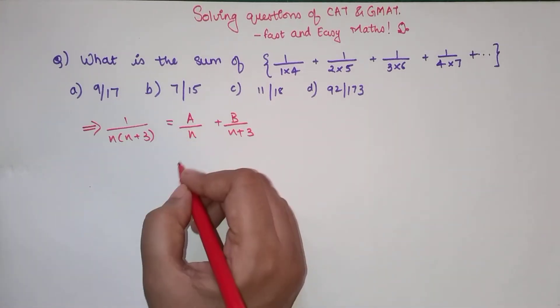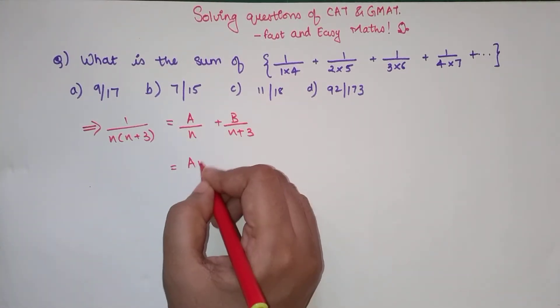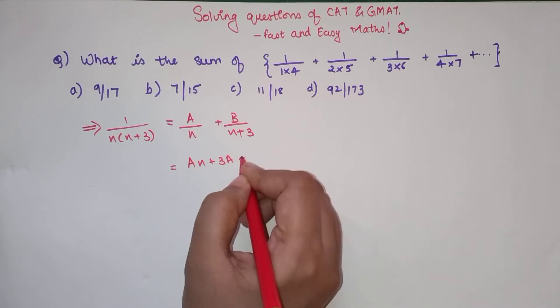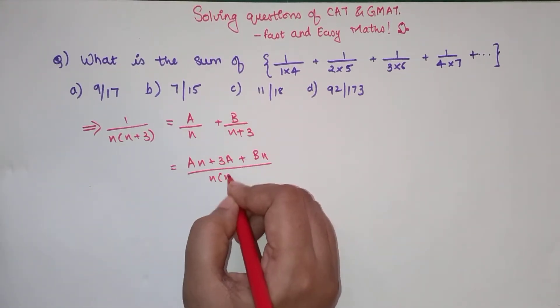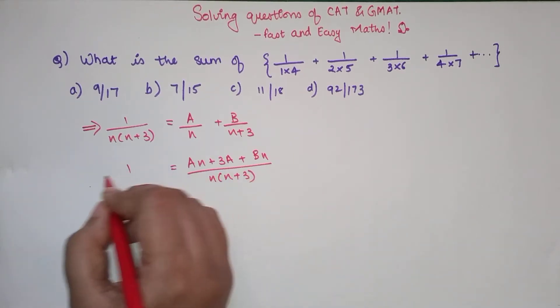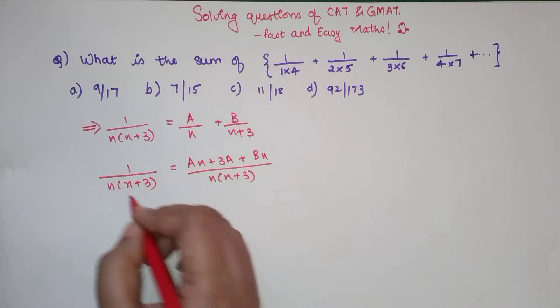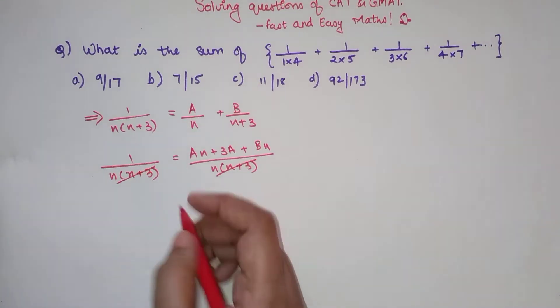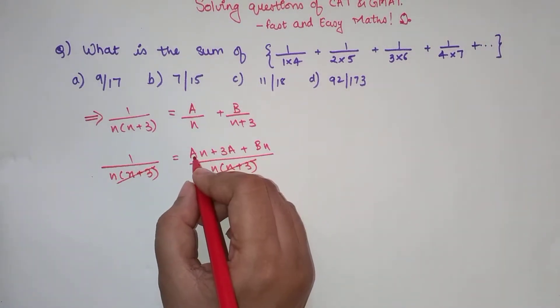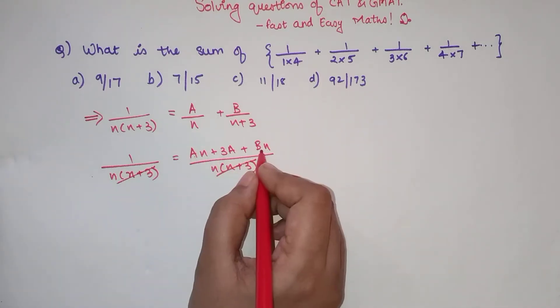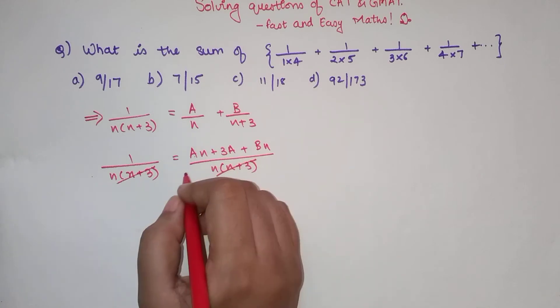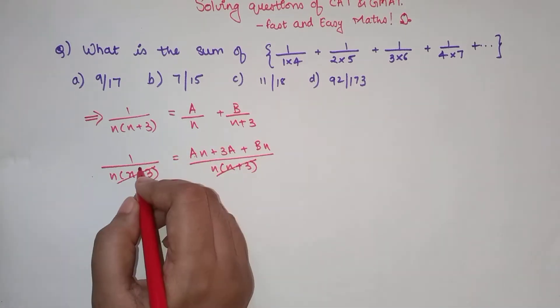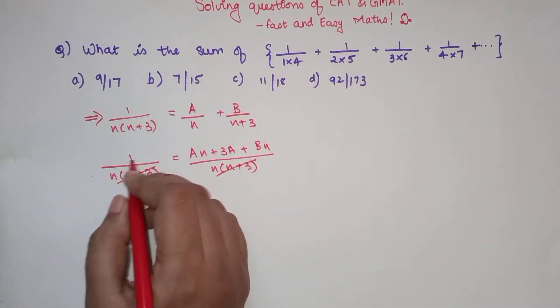So taking LCM, I can write A into N plus 3 plus B into N equals N into N plus 3. The denominators are the same, so they strike out. And if you look over here, we have N terms: A and A plus B, which whole thing is getting multiplied by N, but here we do not have any N terms.